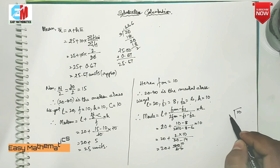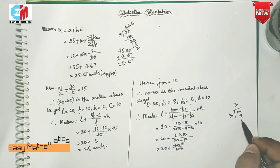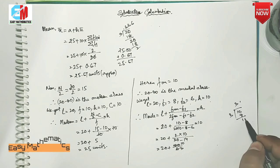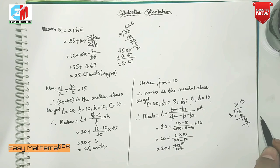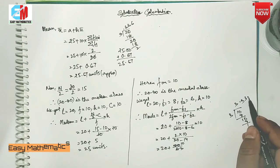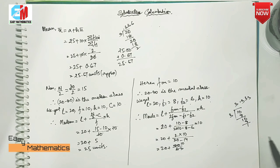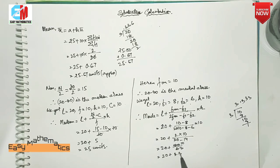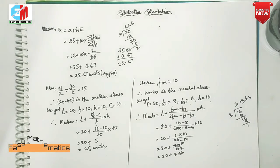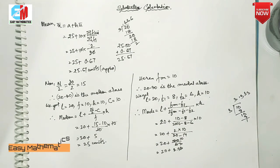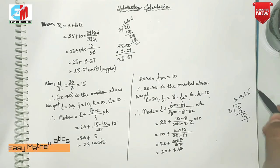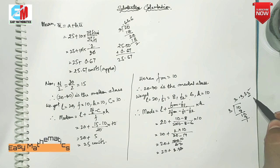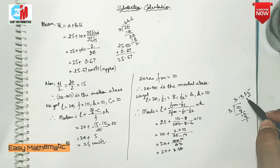We add 3 to 2, then 3 to 3. It's 2 plus 2 to 3. Then it is 5.3 units.